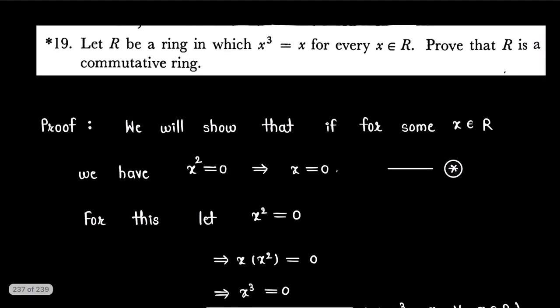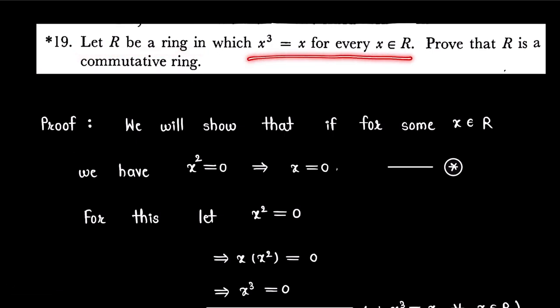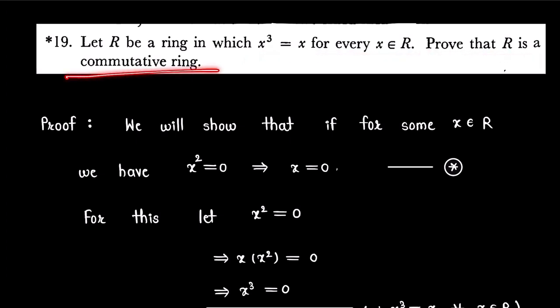Hello friends, welcome back to Rising Mathematics. In this video, I am going to solve an exercise question from the book Topics in Algebra, from chapter 3, Ring Theory. The question is: let R be a ring in which x cubed is equal to x for every element x in ring R. Prove that R is a commutative ring.